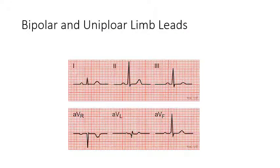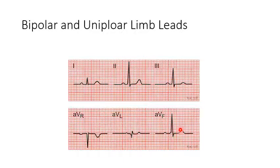Comparing the first three bipolar limb leads (one, two, three) against AVR, AVL, and AVF: AVR clearly has a negative deflection, while AVL and AVF have positive deflections. AVF is very similar to lead two and lead three. These leads look at the electrical activity of the heart not from a vertical plane but from a horizontal plane, which has anterior and posterior parts.